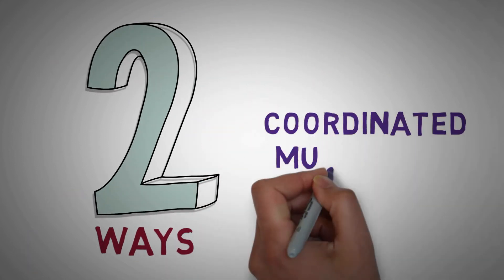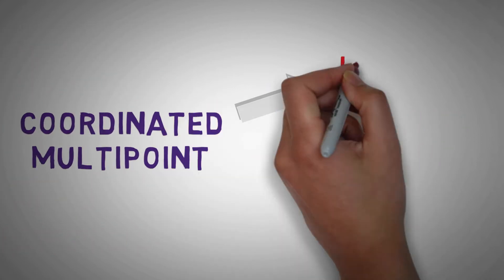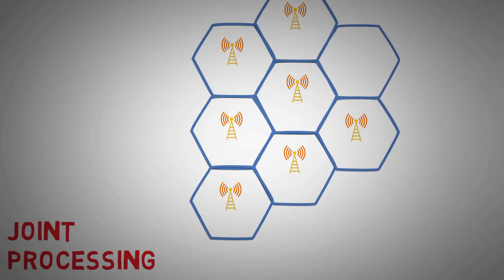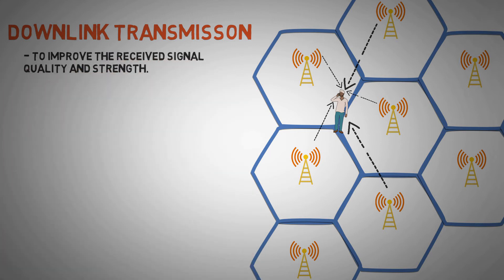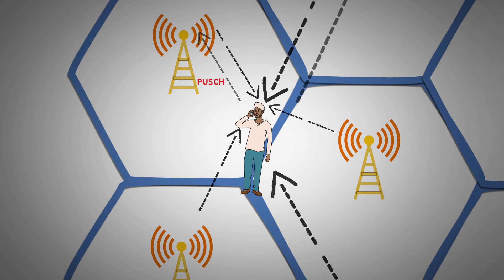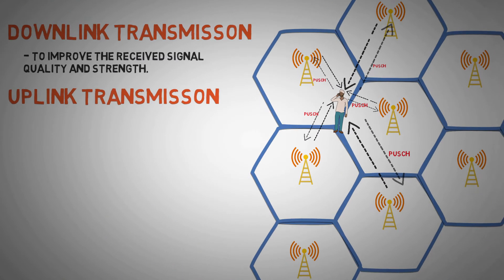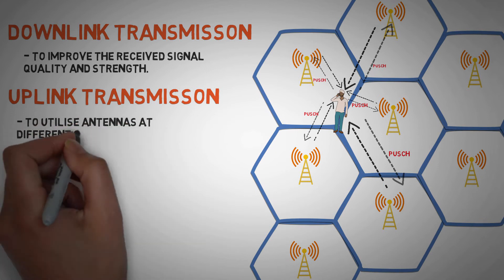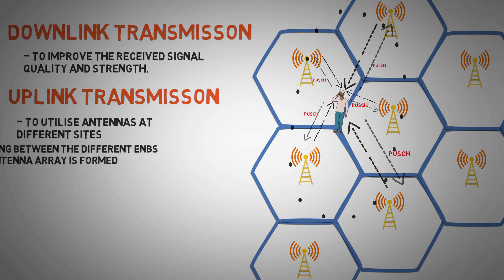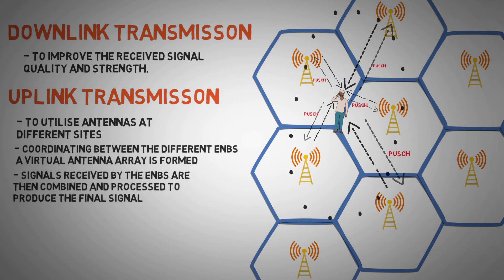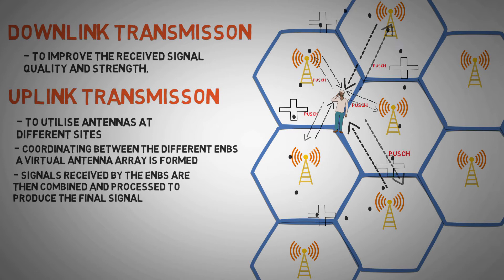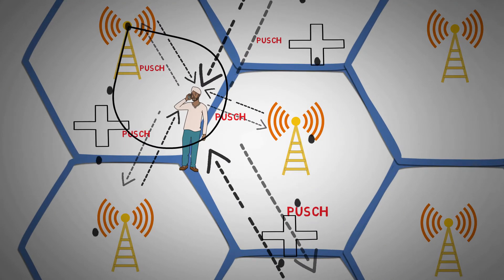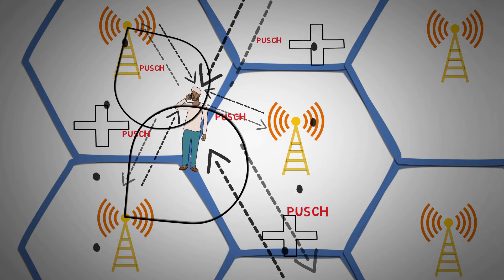There are two ways by which Coordinated Multipoint operates. The first method is called Joint Processing. In this method, for downlink transmission, data is transmitted to the UE simultaneously from a number of different eNodeBs, with the aim to improve the received signal quality and strength. In uplink, the PUSCH is received at multiple cells. The basic concept is to utilize antennas at different sites — by coordinating between the different eNodeBs, a virtual antenna array is formed. The signals received by the eNodeBs are then combined and processed to produce the final signal, allowing signals that are very low in strength or masked by interference to be received with few errors.